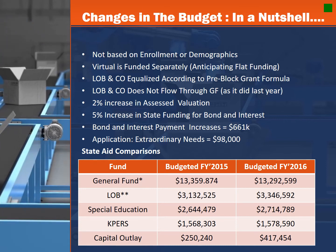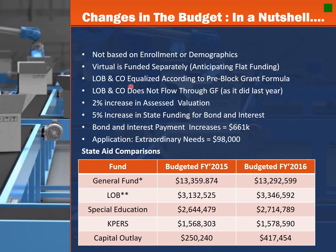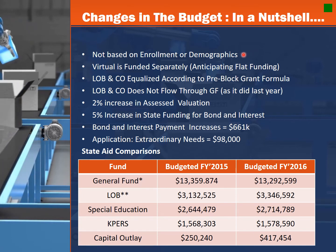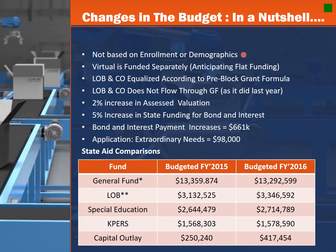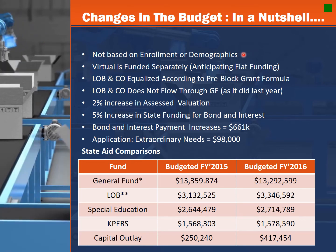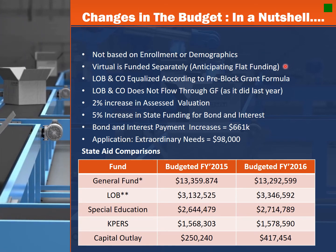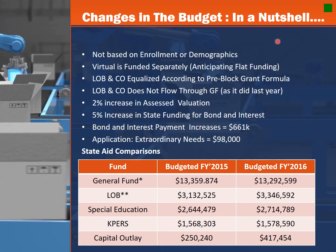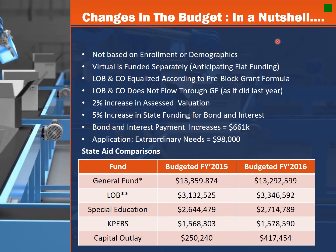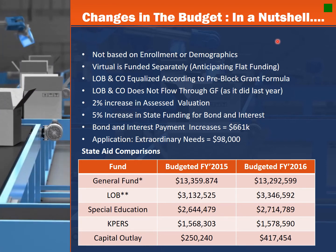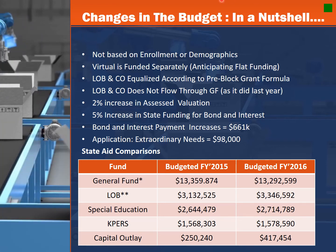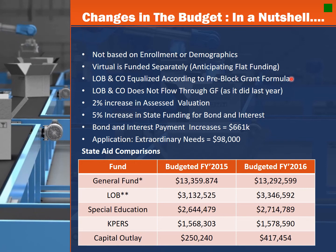In a nutshell, here are a few changes from last year's budget to this year's budget. A reminder that it is not based on enrollment or demographics — you can increase 500 students and that does not mean you will receive additional funds. Likewise, you could decrease a substantial amount of students and you would not see a decrease in your funding, as under the block grant we are locked in.